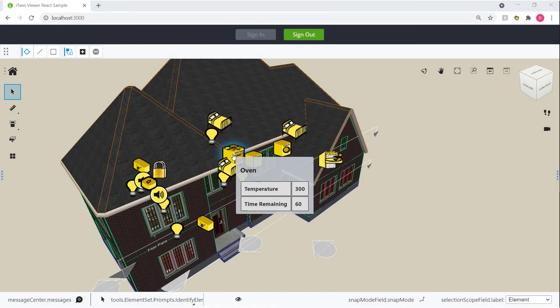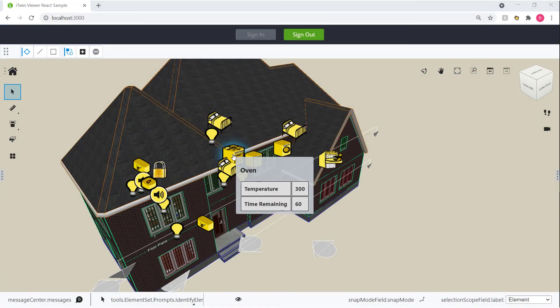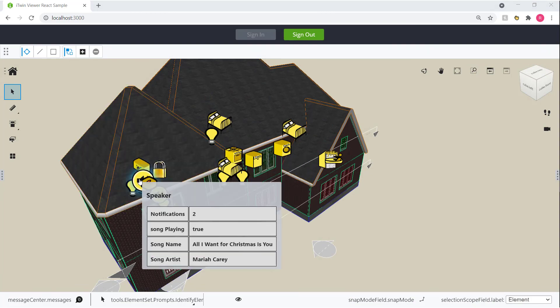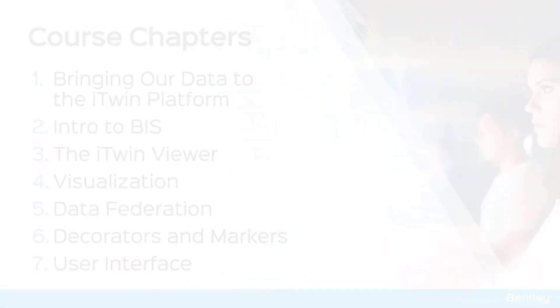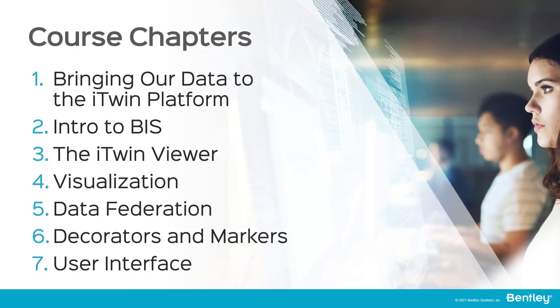In this case, we will add markers to show the smart devices throughout the house and display their current statuses using tooltips. All these steps cover just a fraction of what the iTwin platform is capable of — we will go over some additional key platform features at the end of the course. The first step for now is to start with our house model, the DGN, and create its digital twin. So let's get that going in the next chapter, and we are really excited to be working with you on this project.